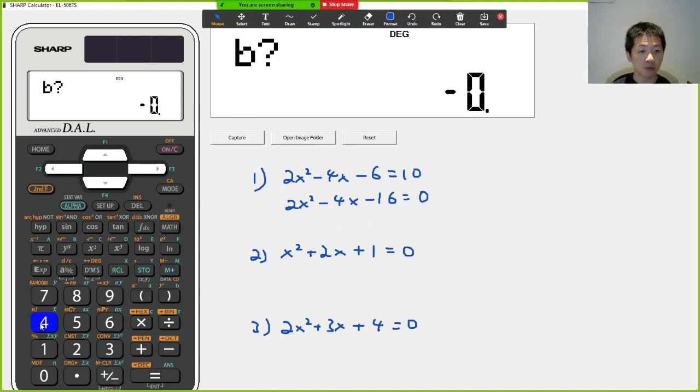So I have b, which is minus 4 equal, c is minus 16. I have equals. And when I press equal, it gives me x1 equals to 4. So that's basically my answer. Let me change the color here. So I have x1 equals to 4.